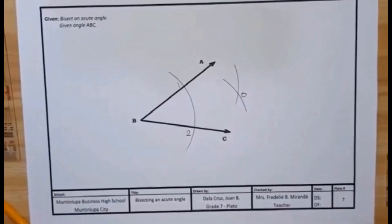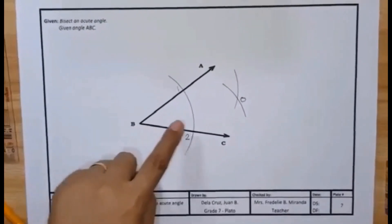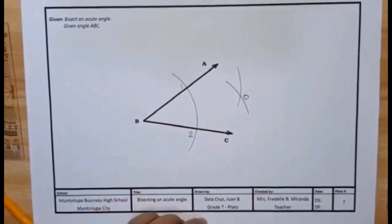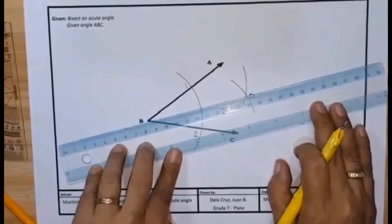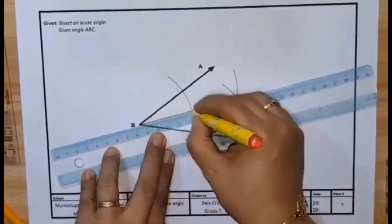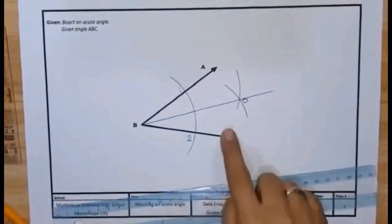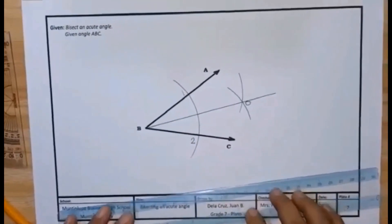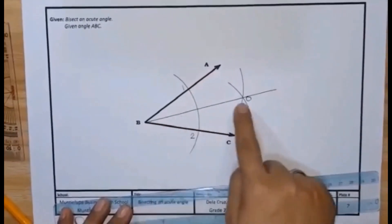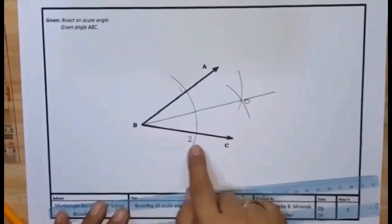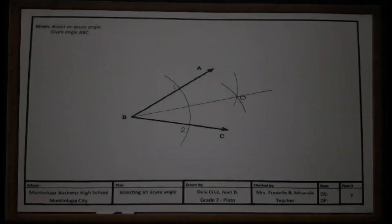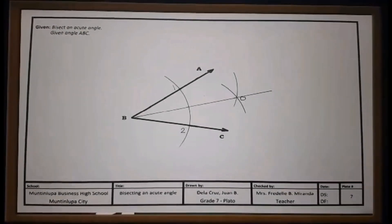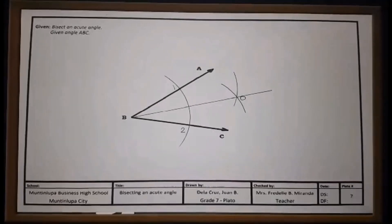Intersection of two lines name it point O. Step number three: connect vertex of an angle B to point O using your foot rule from point B to point O. Connect the two points. We have the line bisector that is exactly the half of the angle. Angle ABO and OBC are the same measurement. We already bisected the given angle. Did you get it? Very good students, I guess you are now getting the hang of this activity. Let's keep going.